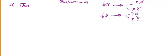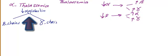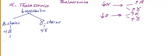In alpha thalassemia there are four types. Focusing on the severe types: if you have a severe decrease in alpha globin, you will either have more beta chains in the blood — which means four beta chains — or you will have more gamma chains — which means four gamma chains.